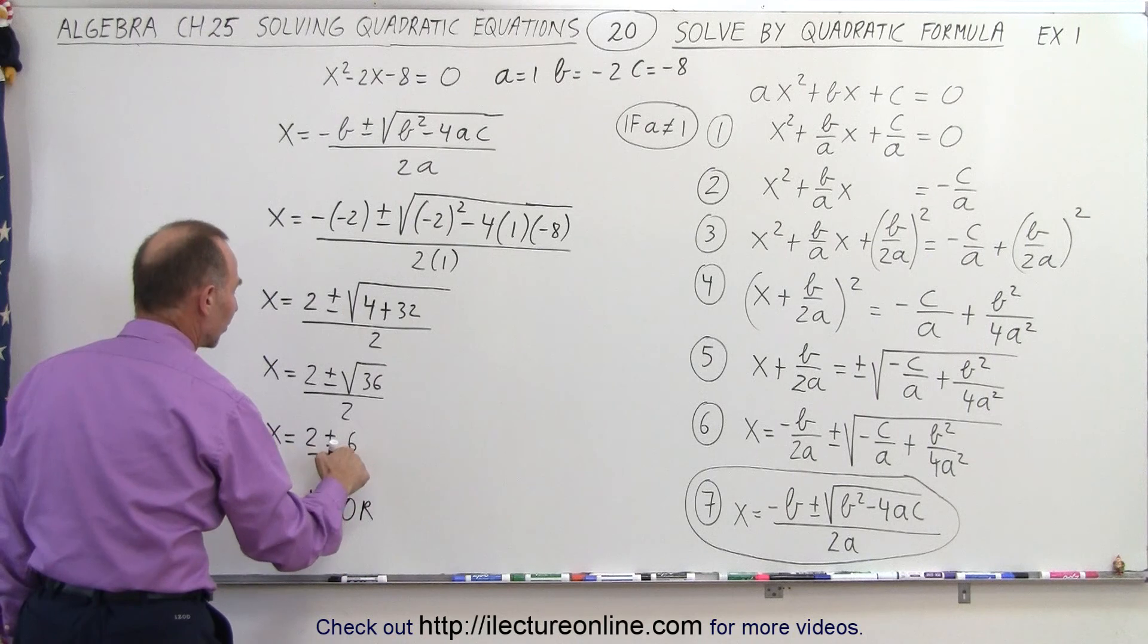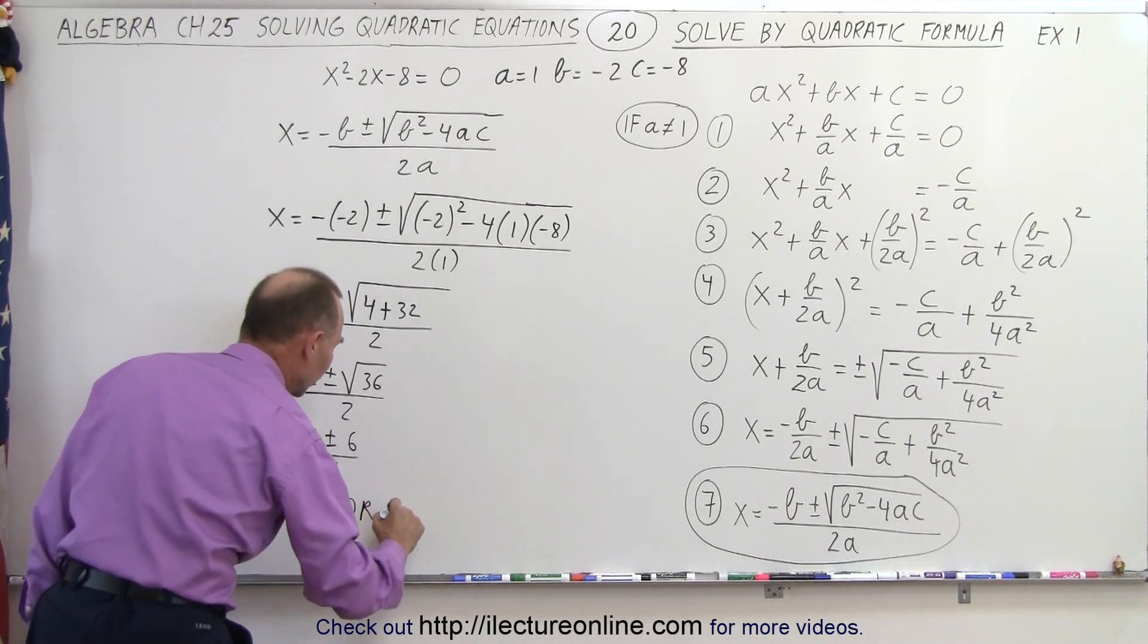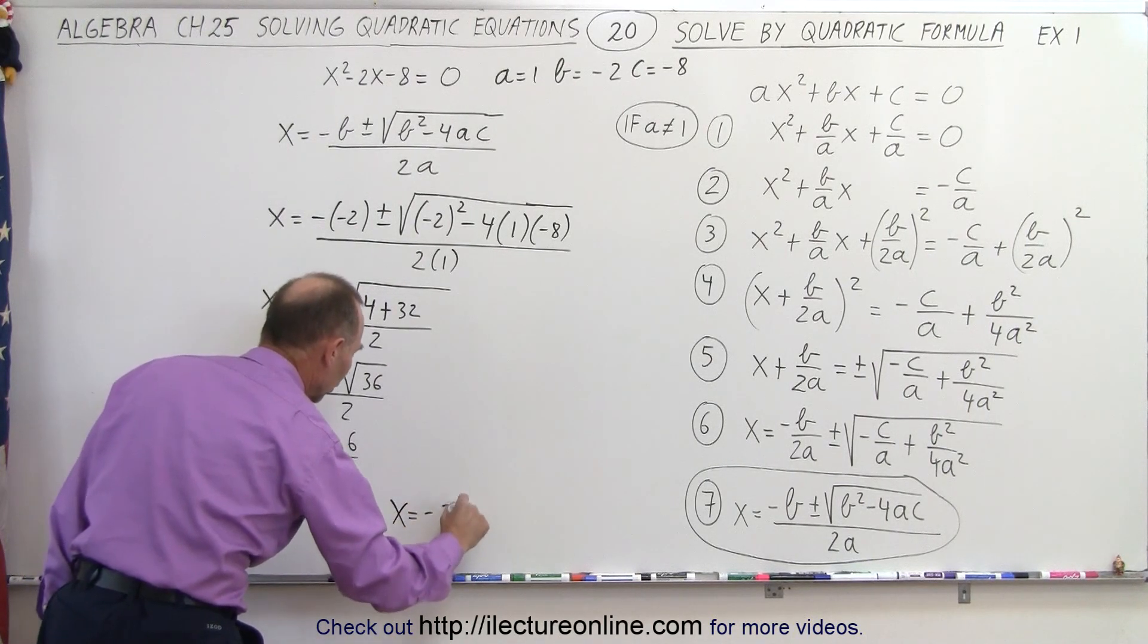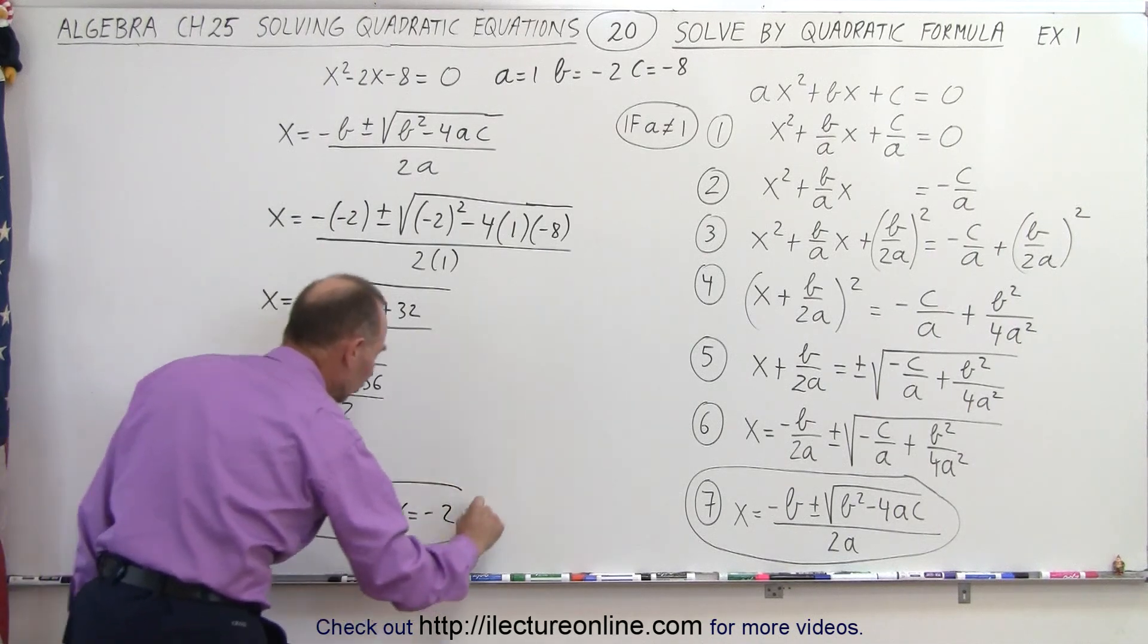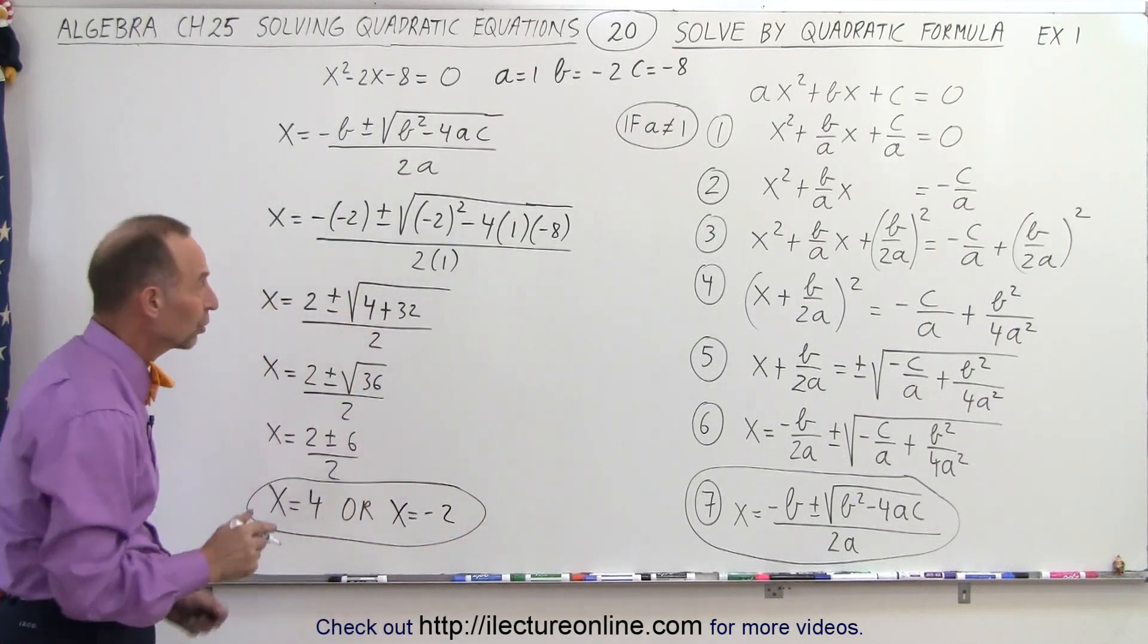Or 2 minus 6, which is minus 4, divided by 2, which is minus 2. X equals minus 2. So those are the two solutions to our original quadratic equation.